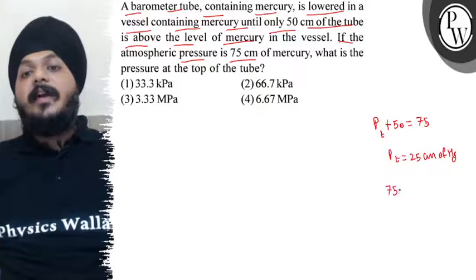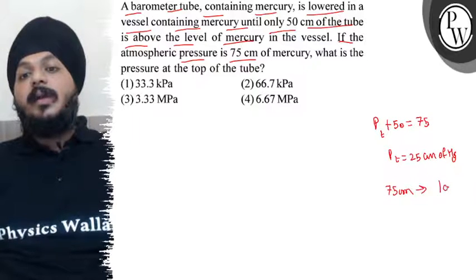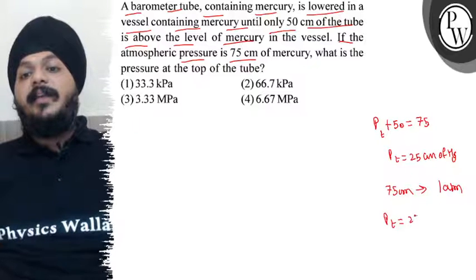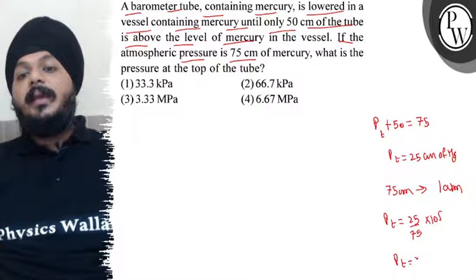Now, 75 cm of Hg is equivalent to 1 atmosphere. That will be 25 by 75 into 10 to the power 5, which is approximately 33.3 kPa.